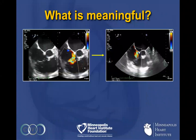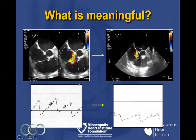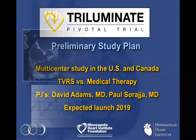Another challenging aspect with TR is deciding how much reduction is meaningful. Many are starting to think the tricuspid valve is a relatively forgiving valve because the RV is so preload dependent. Here's an example where TR goes from essentially severe to moderate. What was interesting is that despite still having moderate TR, the RA pressure became almost normal and this patient became asymptomatic. So what is meaningful in these patients is probably going to be different compared to patients with MR.